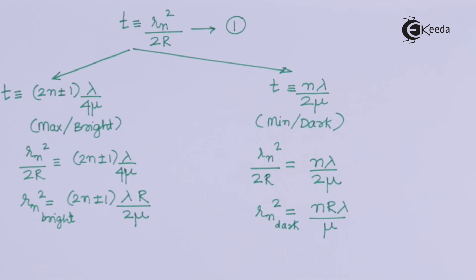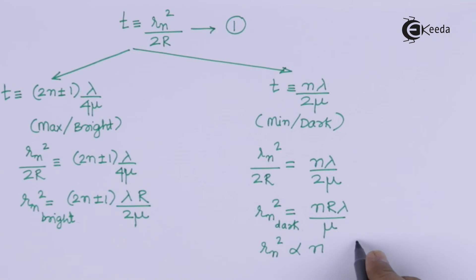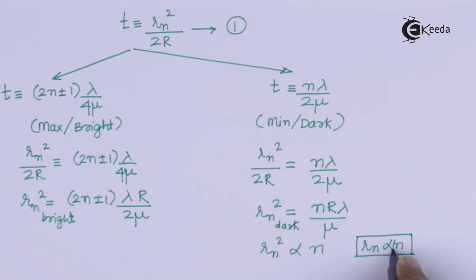From these results, we observe that the square of the radius Rn² is proportional to n. Therefore, Rn is proportional to the square root of n. This means the radius of the rings — specifically dark rings — is proportional to the square root of the order, or ring number (1st, 2nd, 3rd, 4th ring). So it is not a linear variation but rather a square root variation.